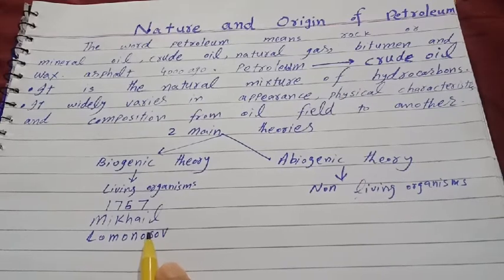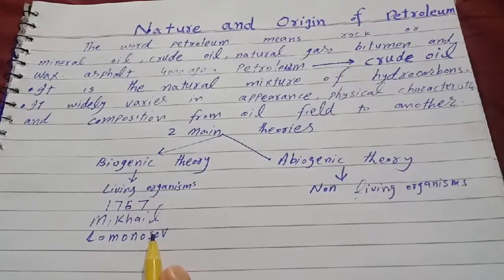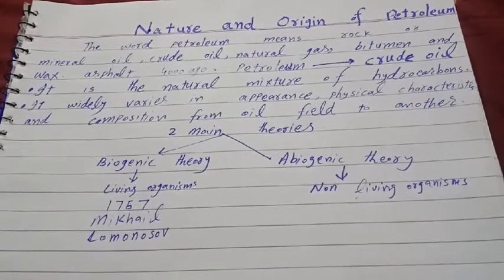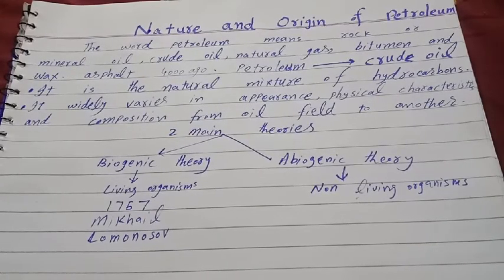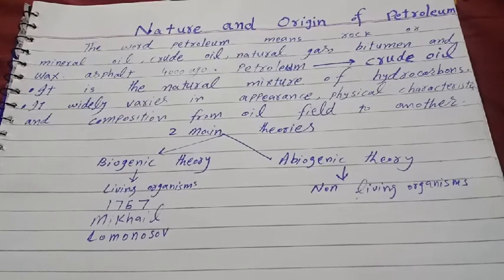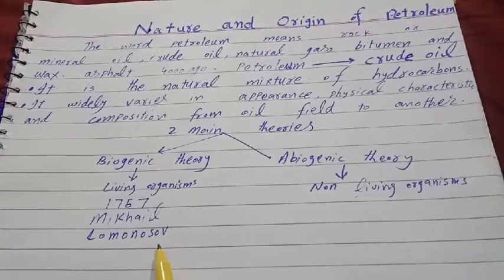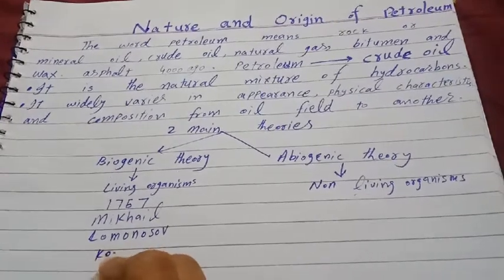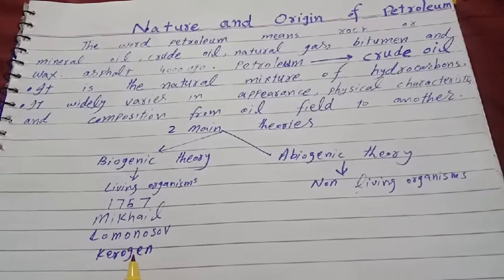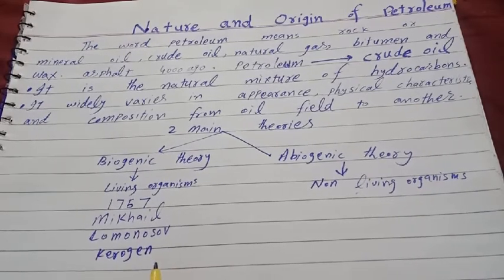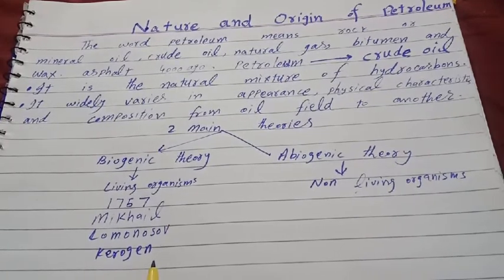Over geological time, this partly decayed organic matter mixed with mud was buried under heavy layers of sediment. The organic mass was subjected to elevated temperature and high pressure, which chemically changed the organic matter first into a waxy material known as kerogen during diagenesis, and then with more heat into liquid and gaseous hydrocarbons in a process known as catagenesis.